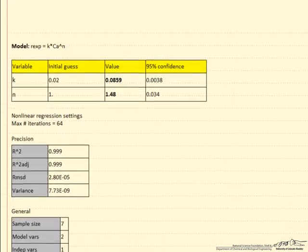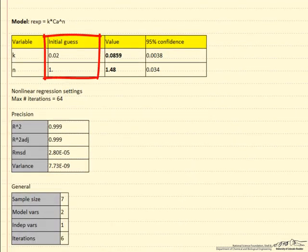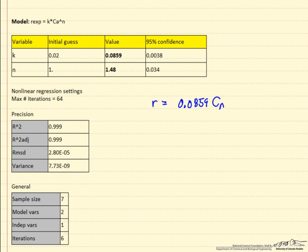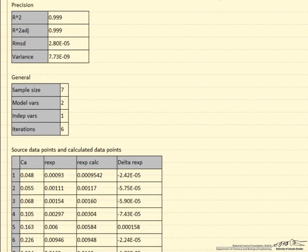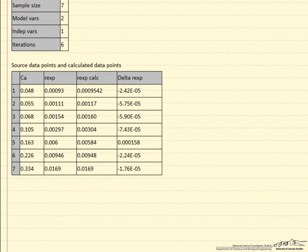Then here is the output from the program. Showed our initial guess. The answer says that our rate is 0.0859 times the concentration of A to the 1.48 power. So 1.5 order is certainly a reasonable result for these data. It gives us confidence limits and number of other properties. It also shows here now is our measured value, our experimental value. Here is the calculated value, and now you notice the values are much closer than shown earlier. This is the difference between the two.